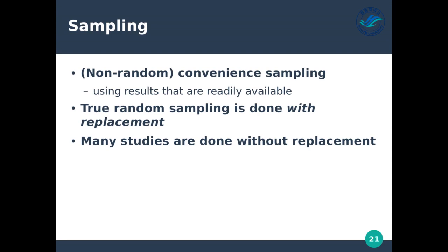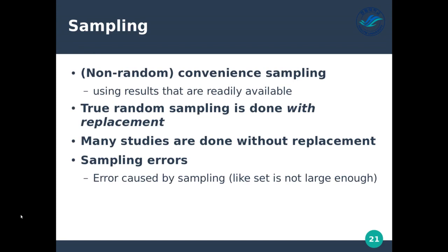Sampling errors are caused by the sampling process — for example, the sample set is not large enough. If we don't have enough data, we'll get lots of errors because we can't make proper conclusions or analysis. Sampling errors can also occur when the way we sampled was not representative of the actual population. How we collect the data is really important for making sure we have high-quality data.